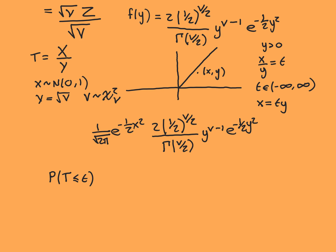We know what the locus of points in our half-plane with a constant T value looks like — it looks like one of these lines. So this is roughly T equals 1, all the points where X divided by Y equals 1. T equals minus 1 might look like this, T equals 2 like this, T equals a half like this, T equals 0 would be this one, T equals minus 2 might look like this, and so on.